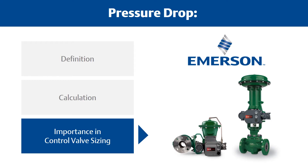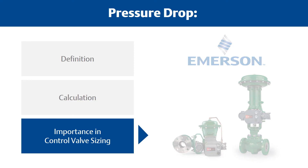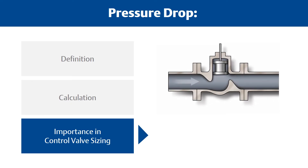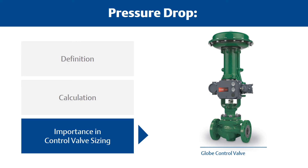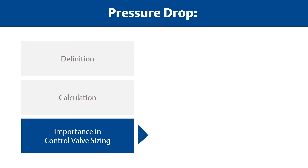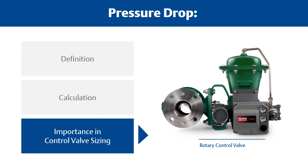Control valve manufacturers publish charts with maximum pressure drop limits for their control valves. The charts for Emerson's Fisher control valves can be found in their product bulletins. The maximum pressure drop a control valve can tolerate at shutoff or when partially or fully open is an important selection criteria. Globe control valves are generally superior in both regards because of the rugged nature of their moving parts. Many rotary control valves are limited to pressure drops well below the body pressure rating, especially under flowing conditions, due to the stresses that high velocity flow imposes on the disc or ball segment.